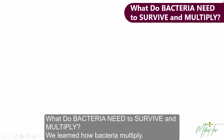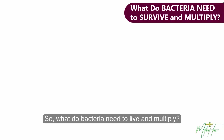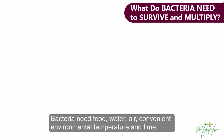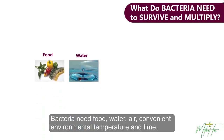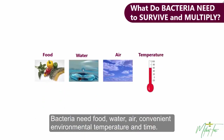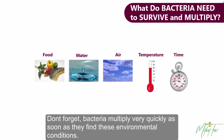What do bacteria need to survive and multiply? So what do bacteria need to live and multiply? Bacteria need food, water, air, a convenient environmental temperature, and time. Don't forget, bacteria multiply very quickly as soon as they find these environmental conditions.